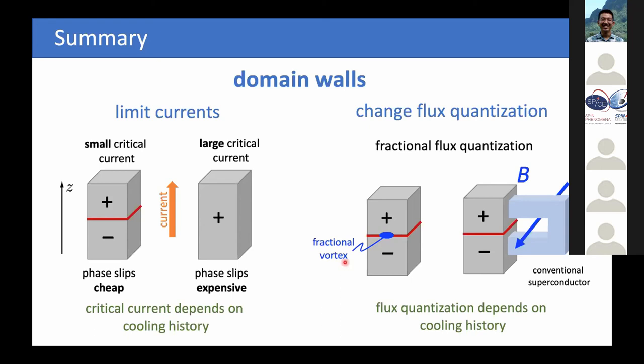Furthermore, we can trap fractional fluxes in these domain walls due to anisotropy, and we could observe fractional flux quantization depending on cooling history. This could be done using SQUID-type devices, attaching a conventional superconductor on the side of a chiral superconductor along the C-axis. Thank you very much for your attention. I am ready to take questions.